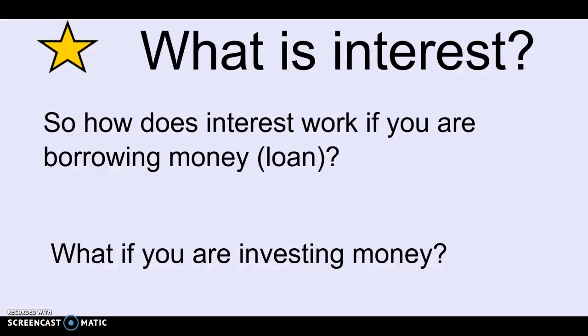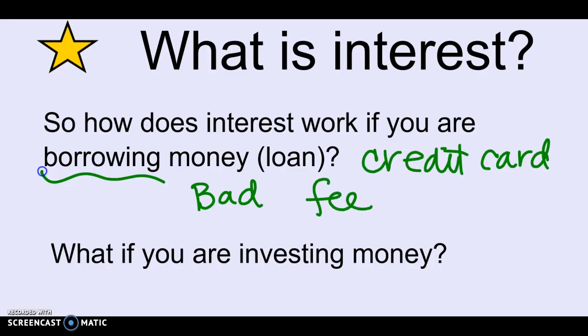So what is interest? We're going to learn a formula for how to find it, but what is interest? Interest works in two ways. If you are borrowing money, so if you're taking out a loan or if you put money on a credit card, then interest is bad for you. Interest hurts you. That means they're going to charge you extra, a certain percent extra for borrowing the money or for putting it on your credit card and paying it back later. So interest when you're borrowing money is bad. It's like an extra fee that gets added on to what you owe back.